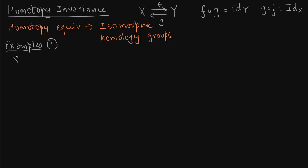What are the examples? If space X is contractible, then X is isomorphic to a point, so the reduced homology groups are 0.